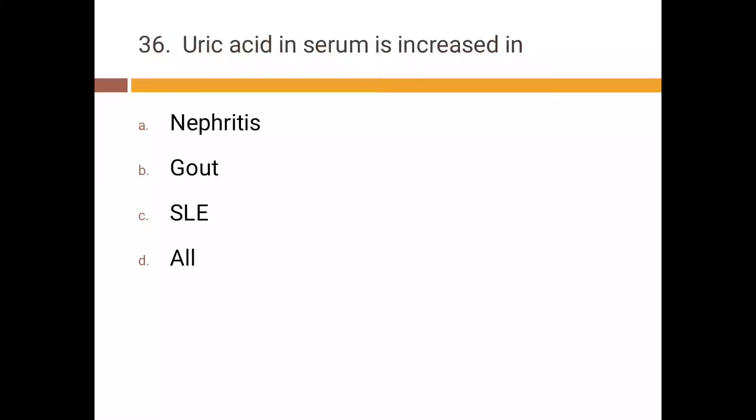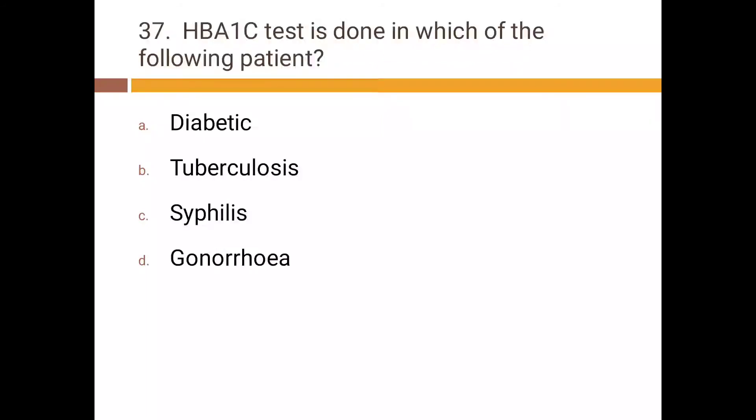Uric acid in serum is increased in: a) nephritis, b) gout, c) SLE, d) all. Correct answer is d) all. HbA1c test is done in which of the following patient: a) diabetic, b) tuberculosis, c) syphilis, d) gonorrhea. Correct answer is diabetic.